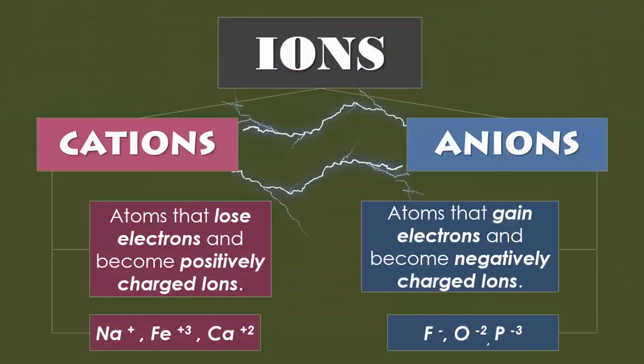Now the difference between cations and anions: cations are atoms that lose electrons and become positively charged ions. Metals do this — every metal on the periodic table, if you look at it, you'll see in the top right-hand corner a little plus sign. Anions, however, are atoms that gain electrons and become negatively charged ions. The non-metals in terms of bonding are always going to be negatively charged. The amount of electrons gained or lost are written in the top right-hand corner next to the elemental symbol, and that's what creates the charge.